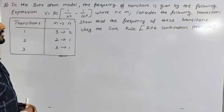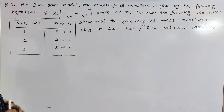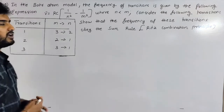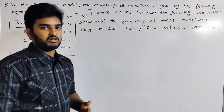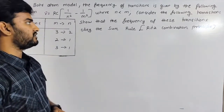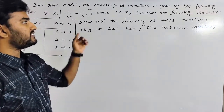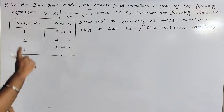In the Bohr Atom model, there is a transition. Transition means the second state to the first state, third state to the first state — those are the transitions. The transition is given by the following expression.